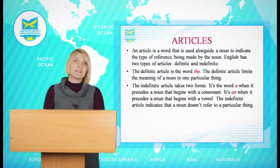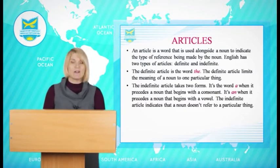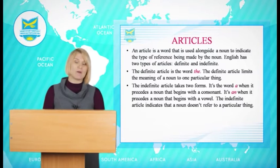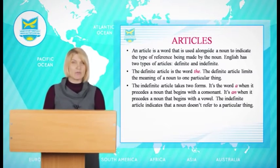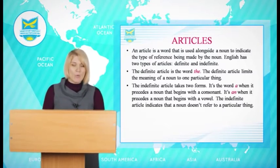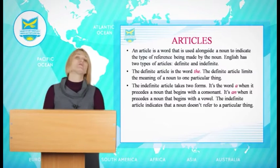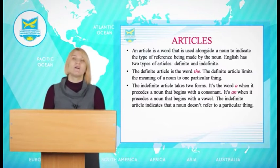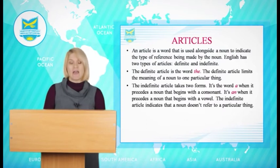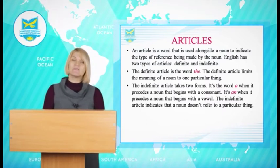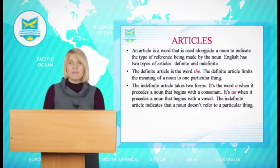We use the indefinite article a/an plus singular countable noun to refer to any one of a kind or group when a noun is mentioned for the first time. For instance: I'd like an apple. Ann is a doctor. I've got a cold.